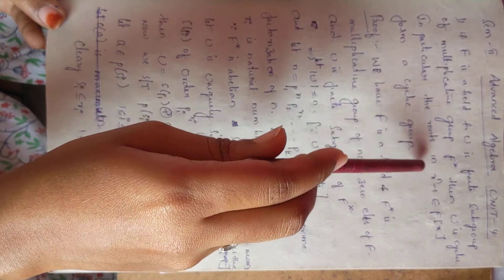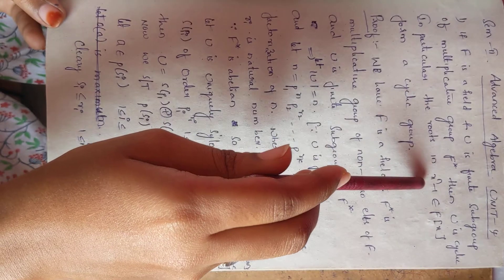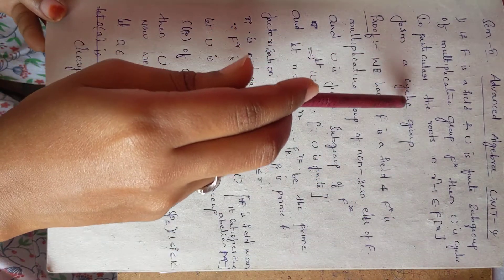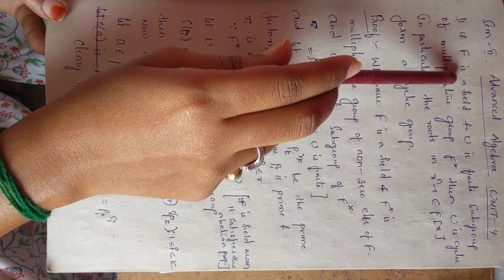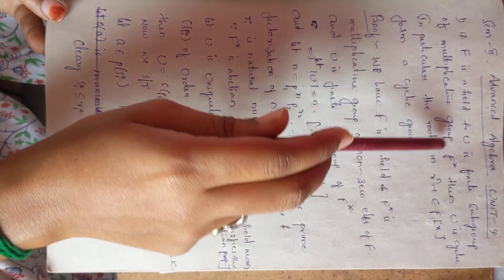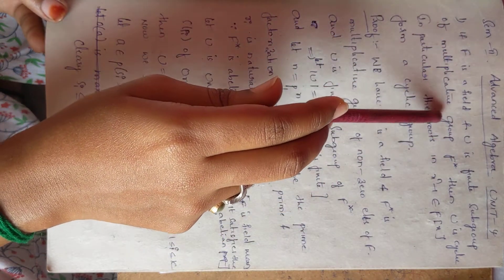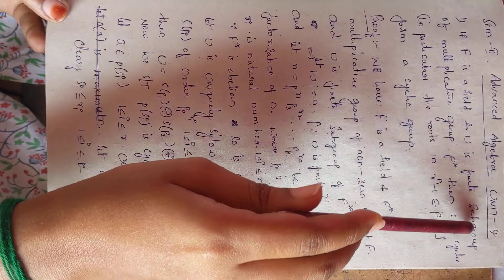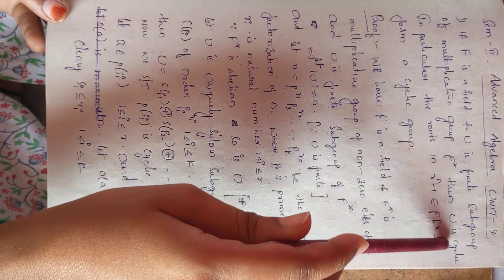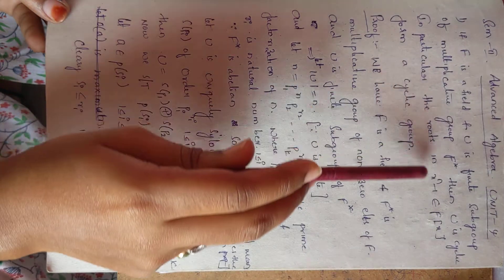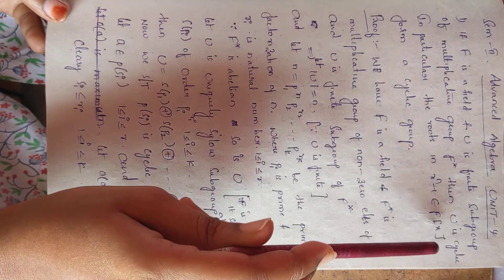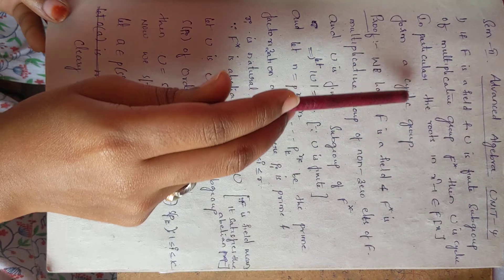In particular, the roots of x^n minus 1 in f[x] form a cyclic group. So here, given f is a field, f* is the multiplicative group of f, and u is a finite subgroup of f*, we have to show that u is cyclic and that the roots of x^n minus 1 also form a cyclic group.